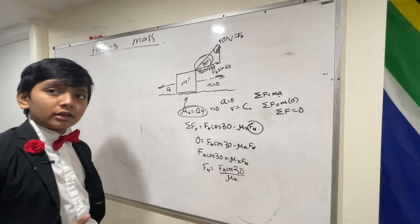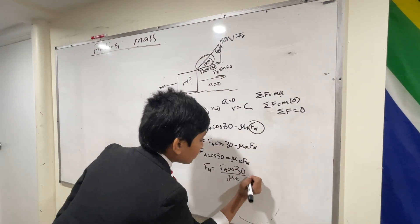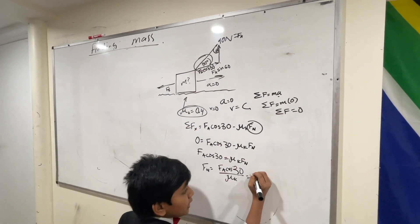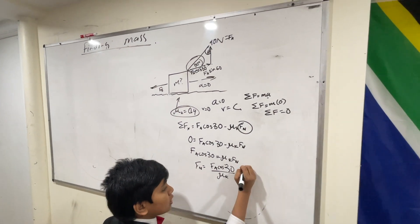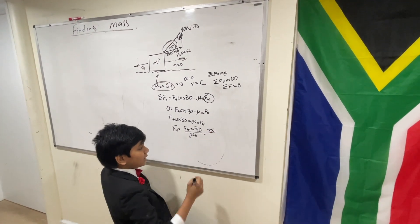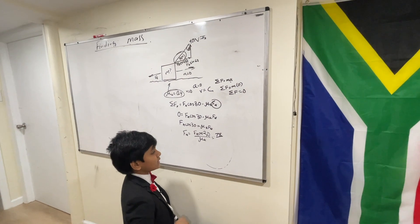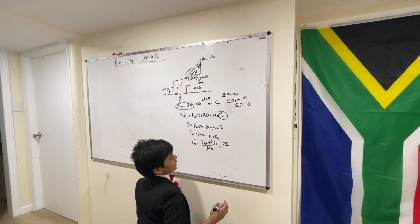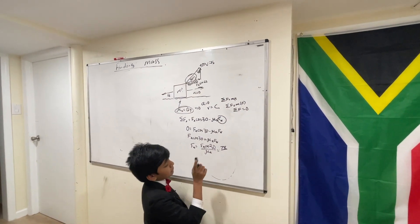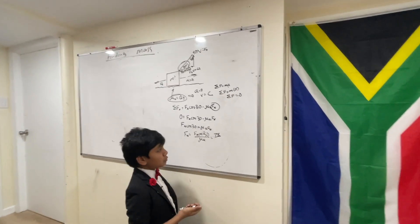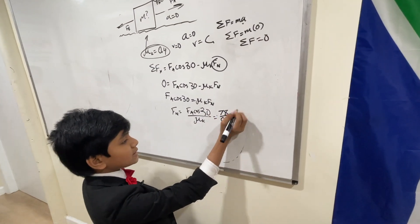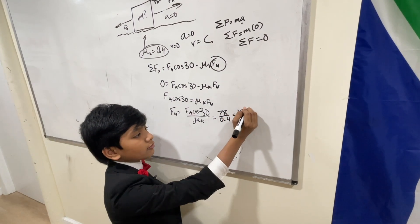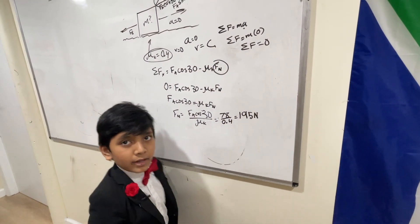Now we plug in all our values. We have 90 cosine 30, and just for convenience, we can use 0.866 here. So this is actually 78 if you multiply it by 0.866. And you divide that by mu k. And what is mu k? Well, we know it's 0.4.